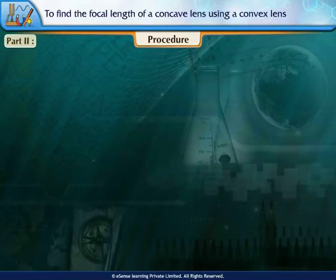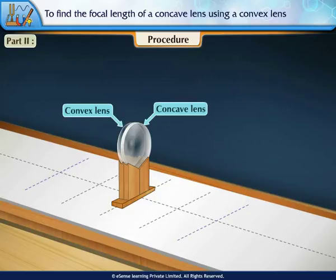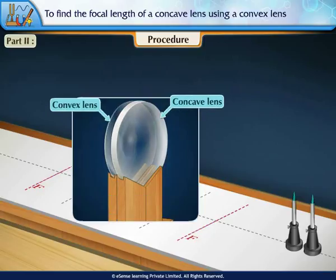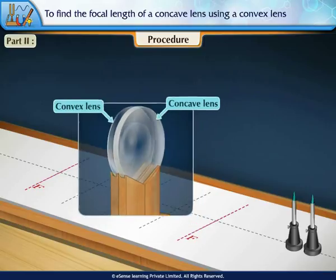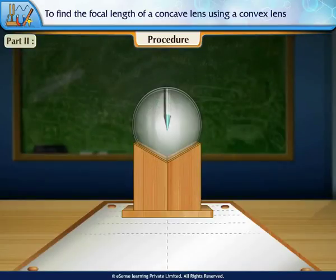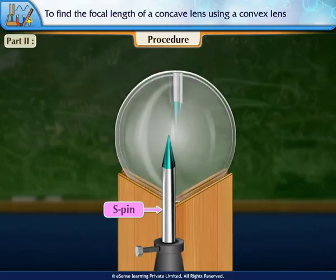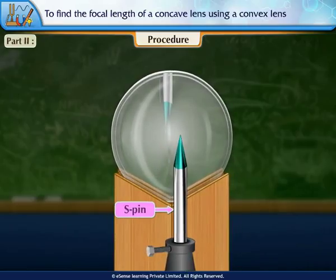Part 2: Now, use the convex and concave lens in combination to determine the focal length of the lens combination F by the two-pin parallax method. Mount the concave lens in contact with the convex lens on the same lens stand. Place the object pin O-pin in front of the concave lens. Observe the image of the O-pin from the convex lens side. Place the search pin S so that there is no parallax between the S-pin and the image of the O-pin.